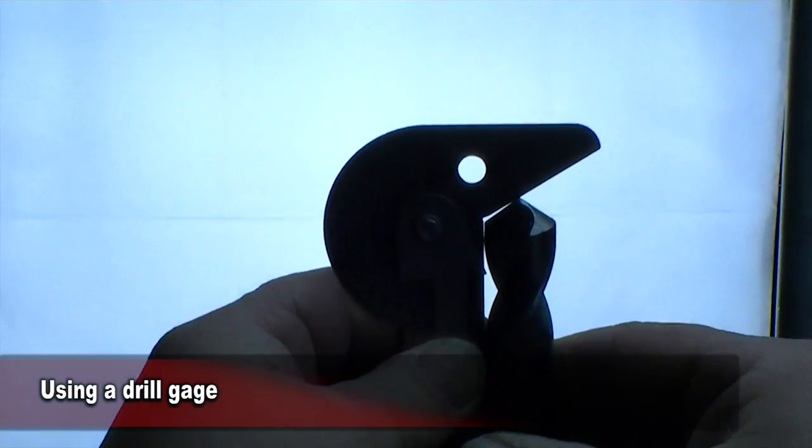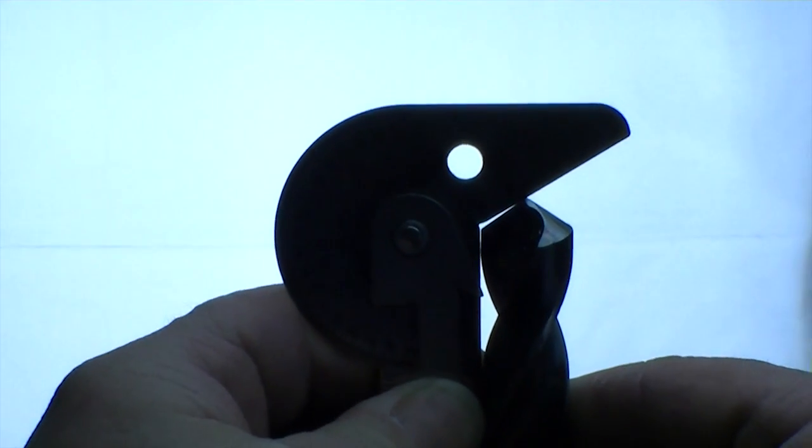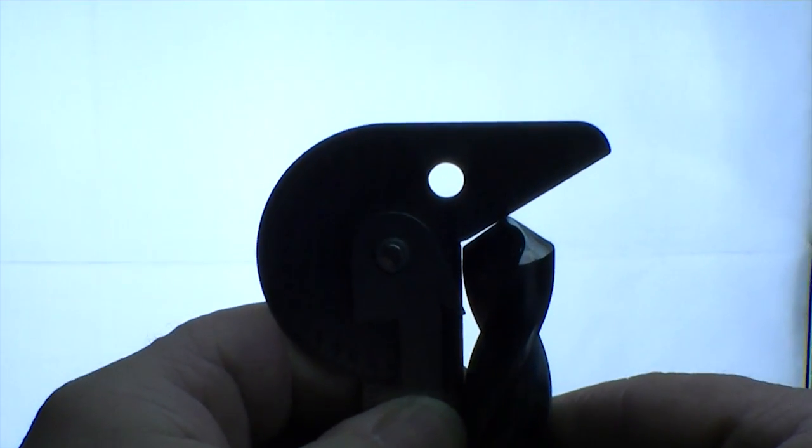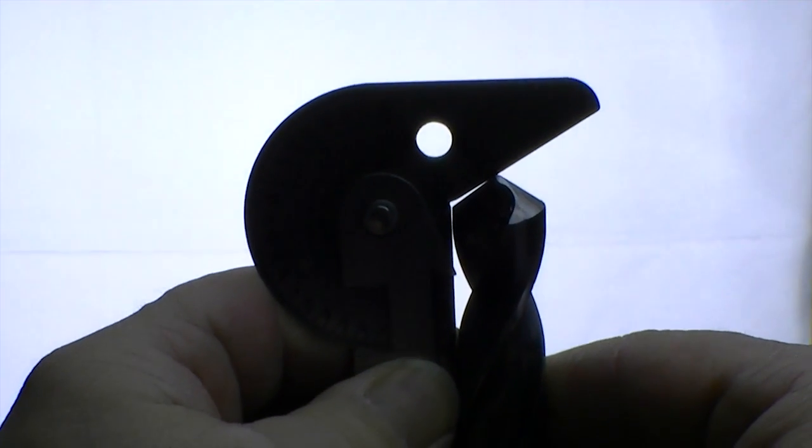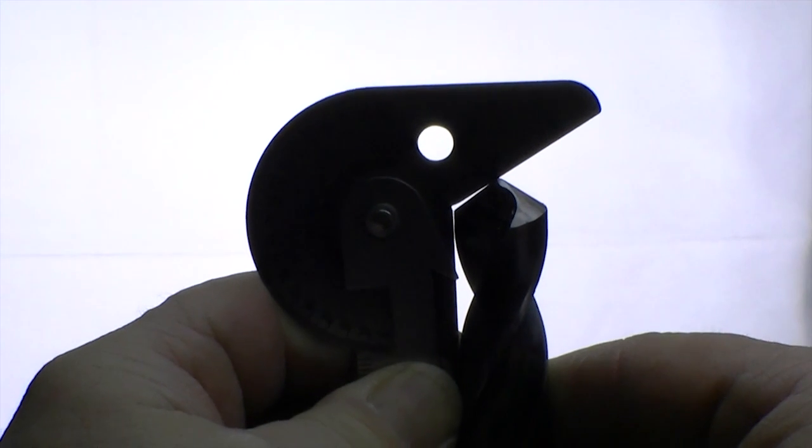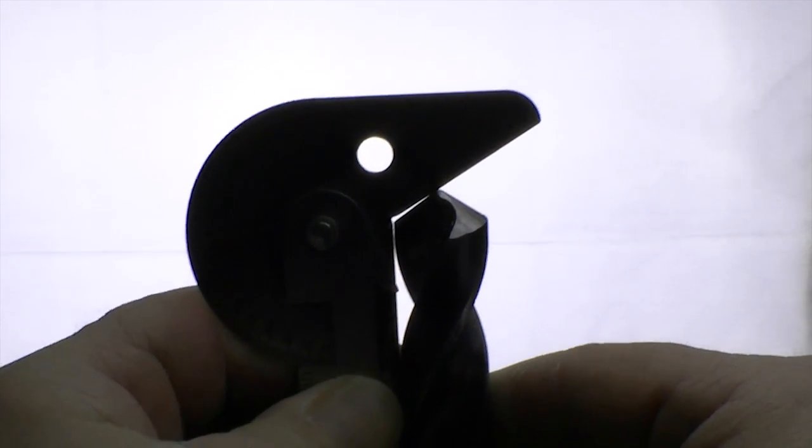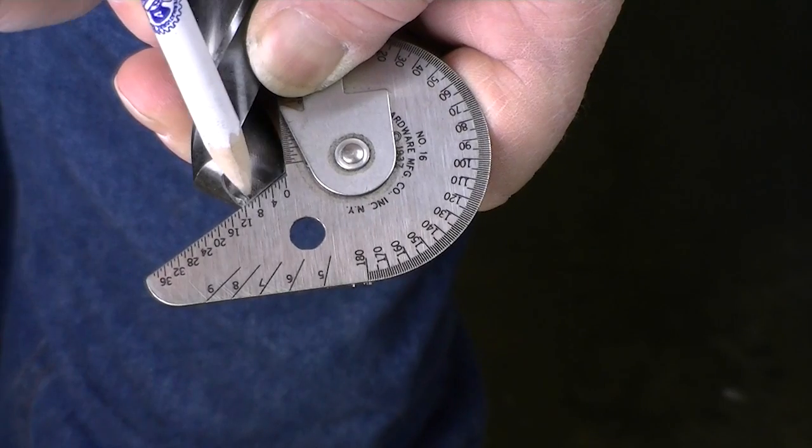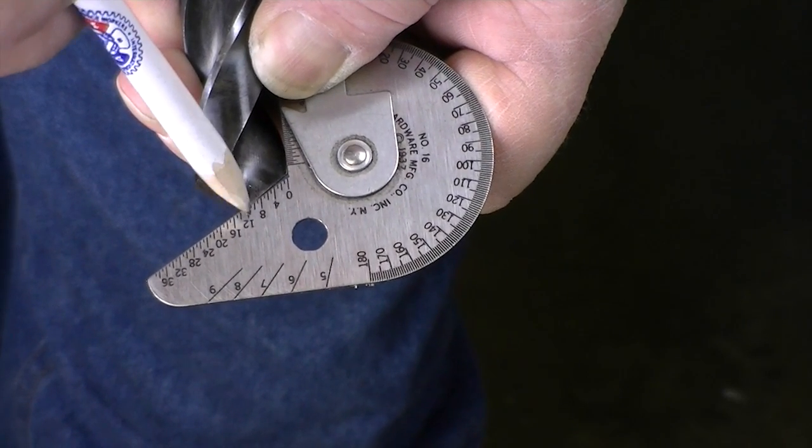When I put the drill against the gauge and hold it up to the light, you can see that the amount of space between the drill and the gauge gets narrower as you move towards the center of the drill. That means the center of the drill needs to be ground more than the outside of the drill.